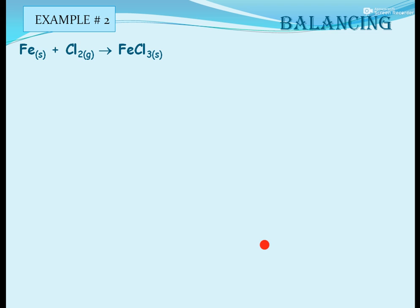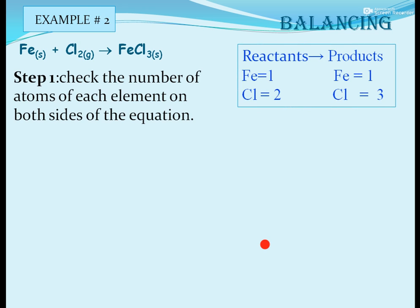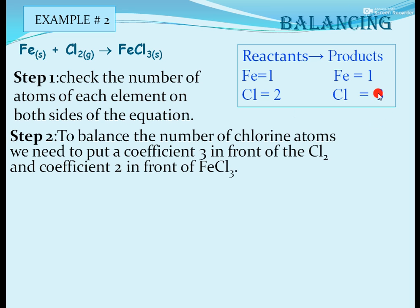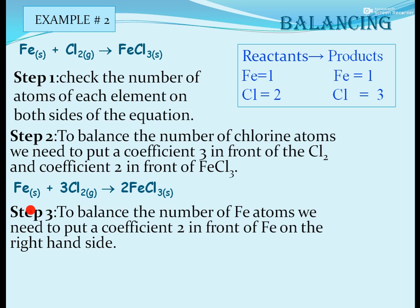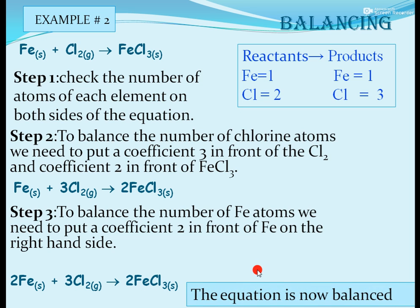Example 2: Fe + Cl2 → FeCl3. Fe atoms are balanced, but chlorine is 2 on the reactant side and 3 on the product side. We multiply FeCl3 by 2 and Cl2 by 3, giving 3Cl2 and 2FeCl3. This gives 6 chlorine atoms on each side. However, Fe is now 1 on the reactant side and 2 on the product side, so we put coefficient 2 in front of Fe. The balanced equation 2Fe + 3Cl2 → 2FeCl3 has 2 Fe atoms and 6 Cl atoms on both sides.